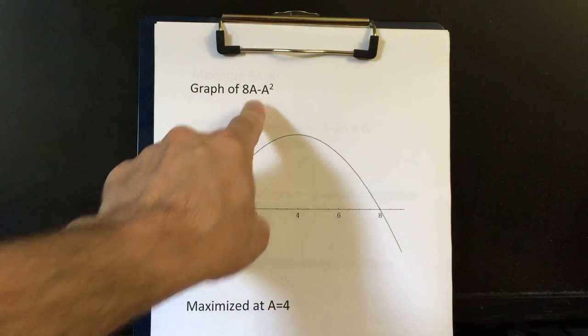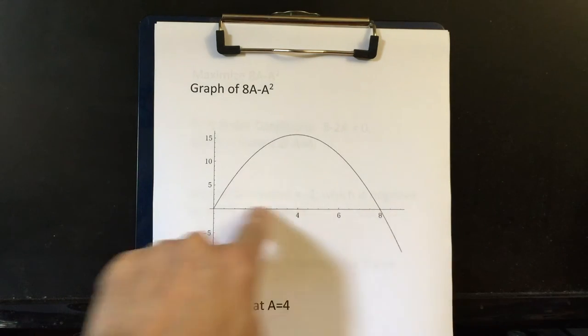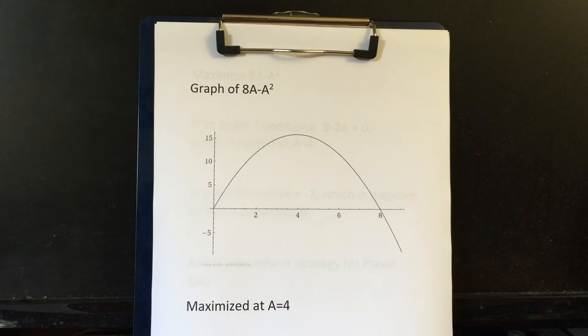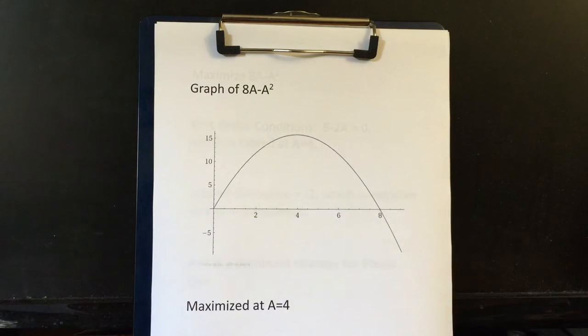We can graph 8A minus A squared. We get the graph. This is the value of A and this is the value of the function. And we see that this is maximized when A equals four. So the answer is going to be when A equals four.